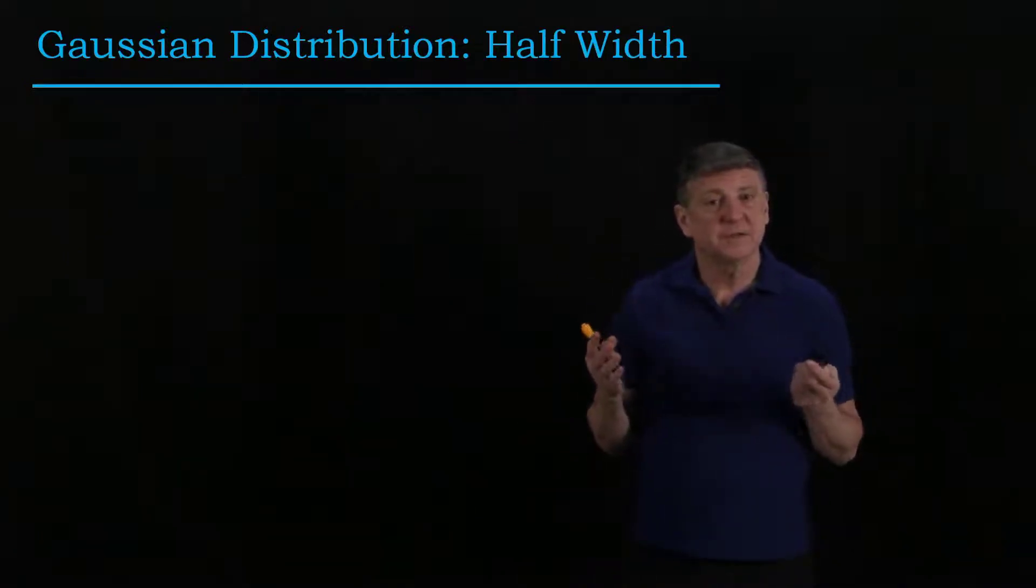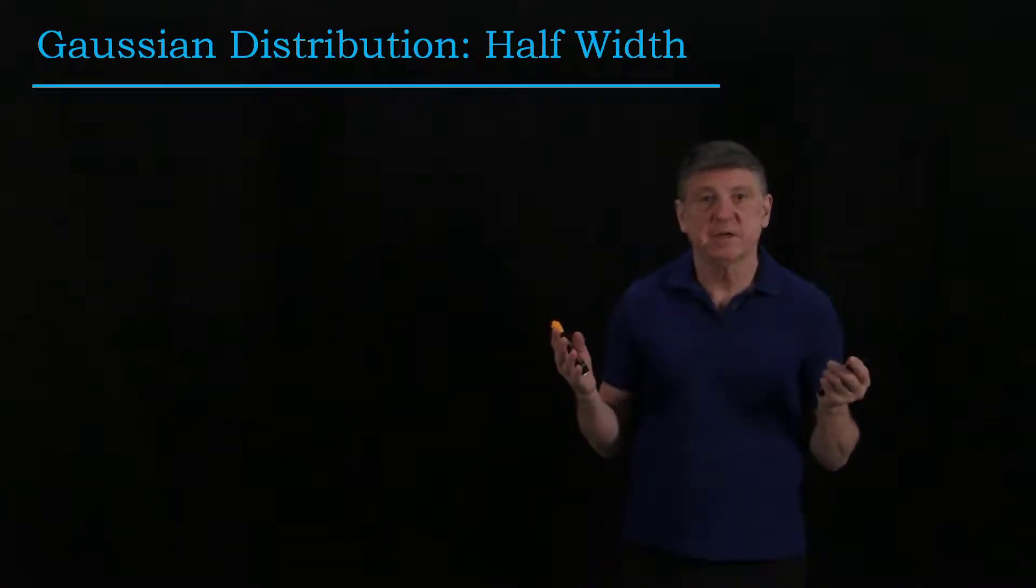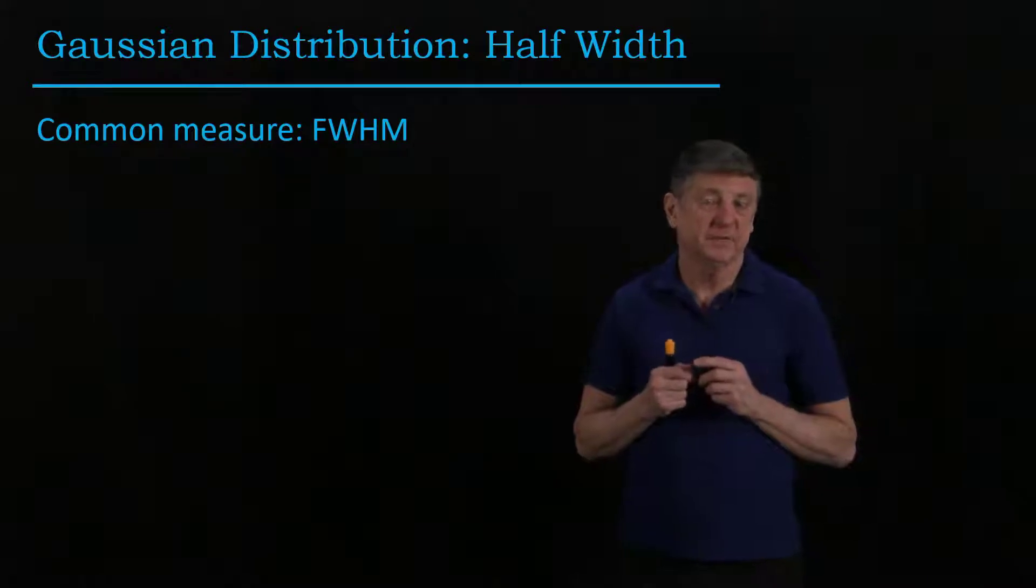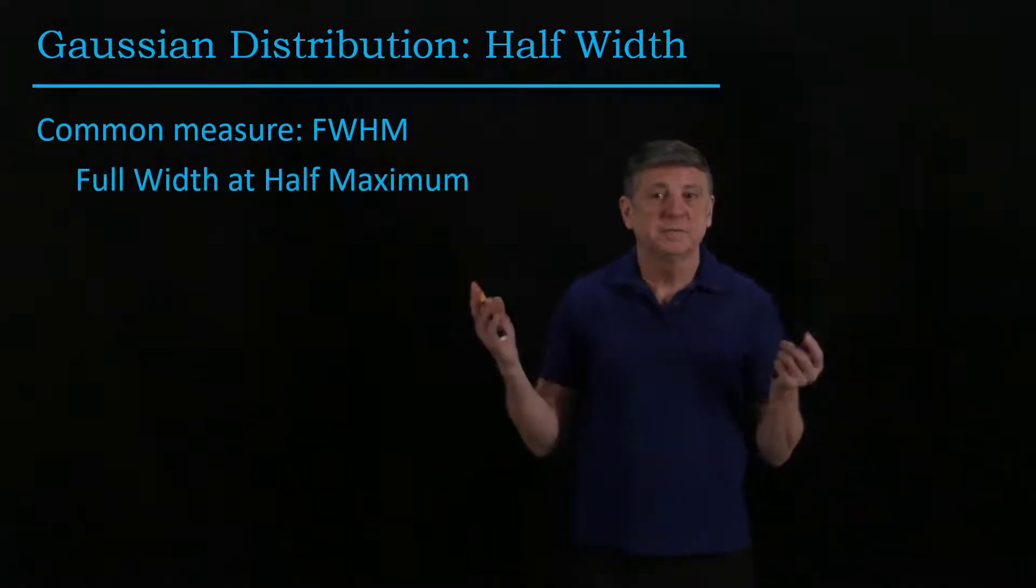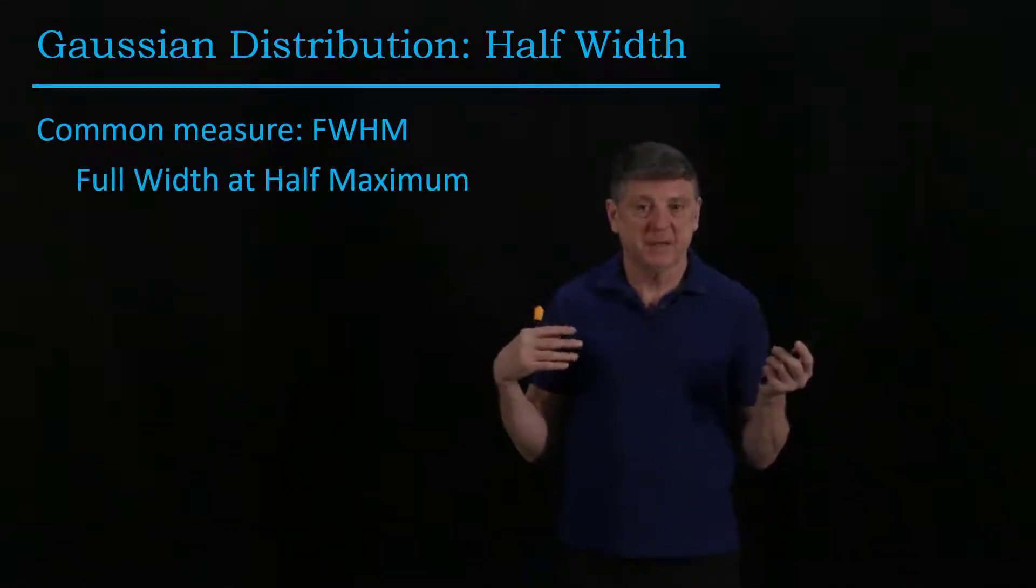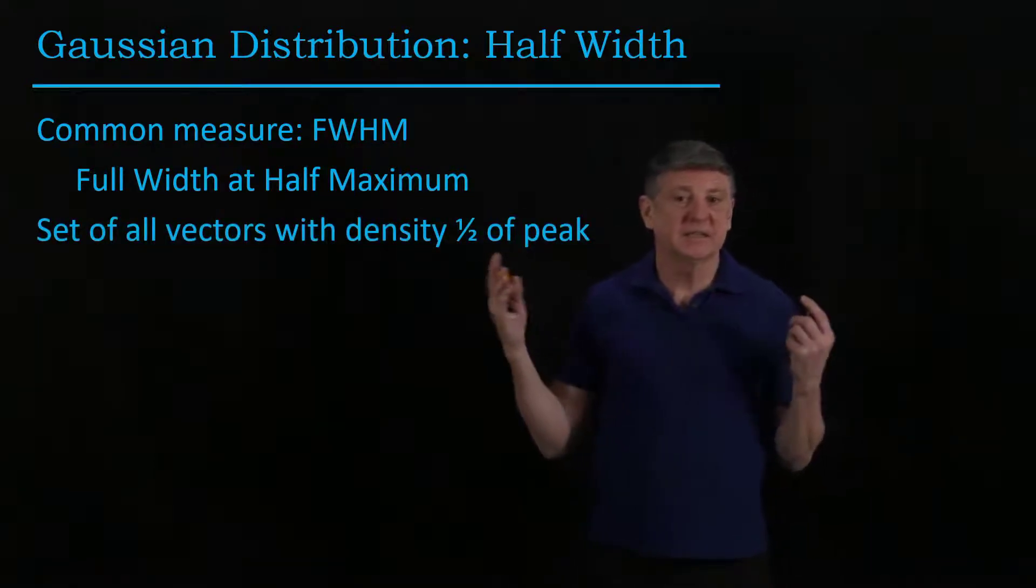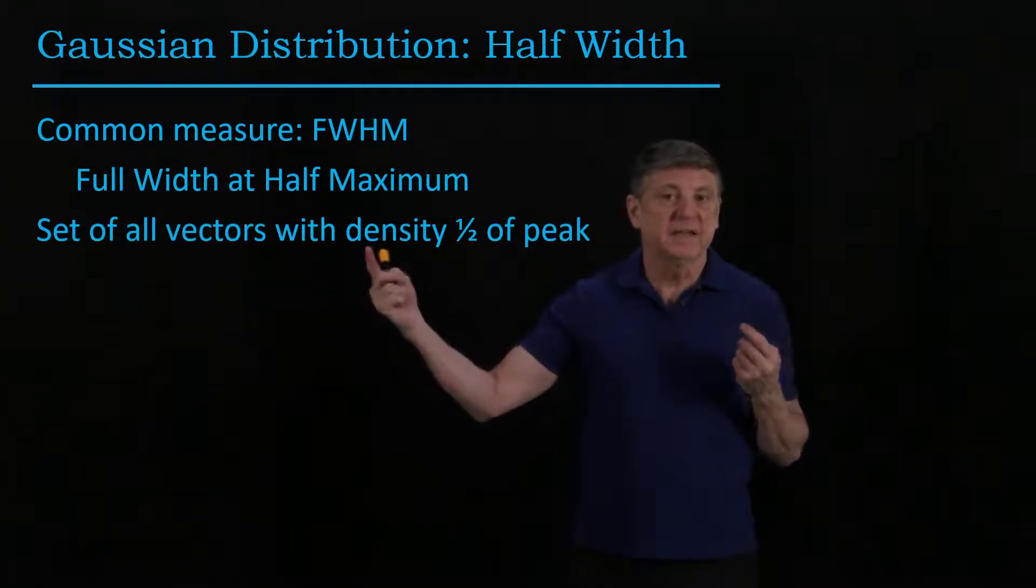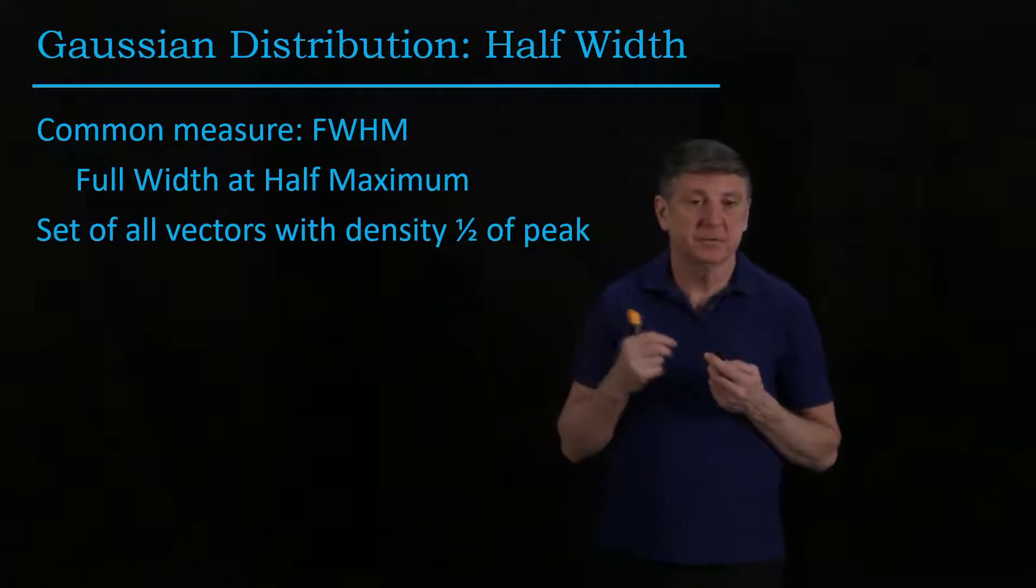Well that is in statistics and physics a measure of what's called the half width of the Gaussian. So this is measured as the full width at half maximum, and what that means is it's the set of all vectors that have a density that's one half of the peak.